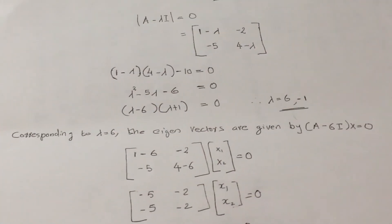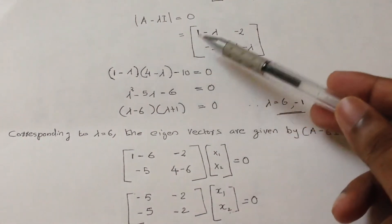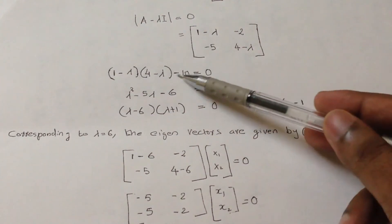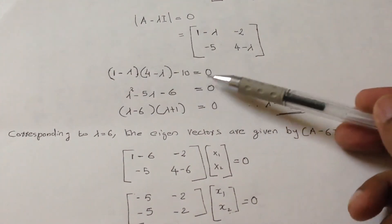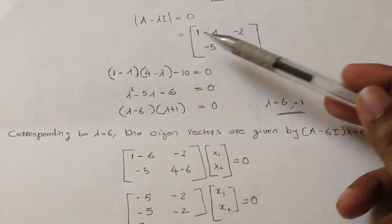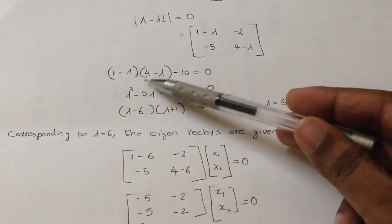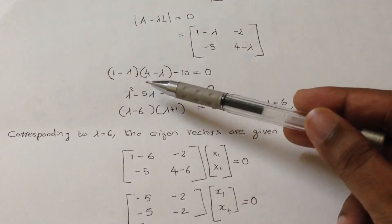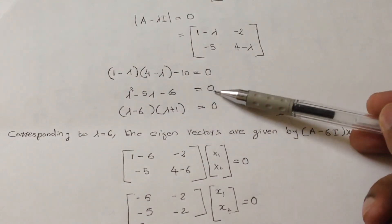Simplifying the determinant: (1 minus lambda)(4 minus lambda) minus (minus 2)(minus 5) equals 0. That gives us (1 minus lambda)(4 minus lambda) minus 10 equals 0. Expanding: lambda squared minus 5 lambda minus 6 equals 0.